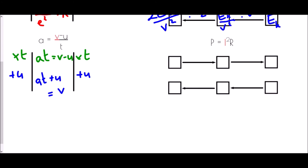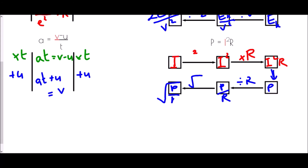For P = i²r using the flowchart, we want I as the subject — that's our starting point. First, I was squared to make i². Then i² was multiplied by r to give i²r, which equals P. Working backwards: instead of multiplying by r, divide by r to get P/r. Then instead of squaring, we take the square root. So I = √(P/r), and I is the subject.